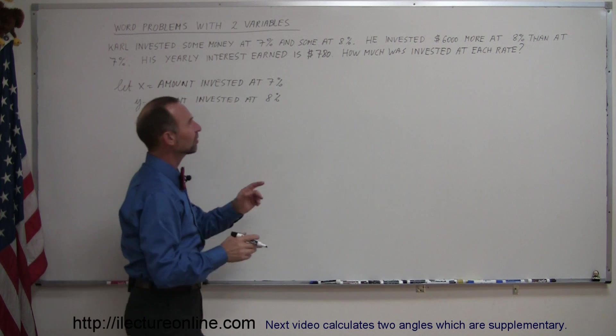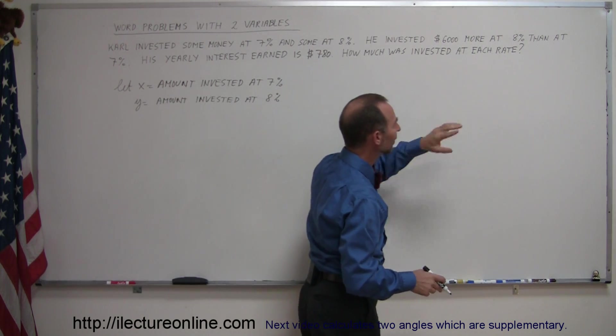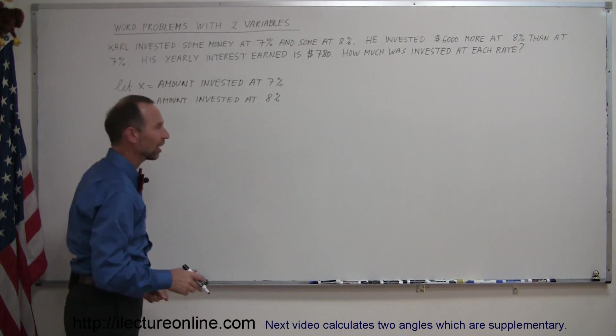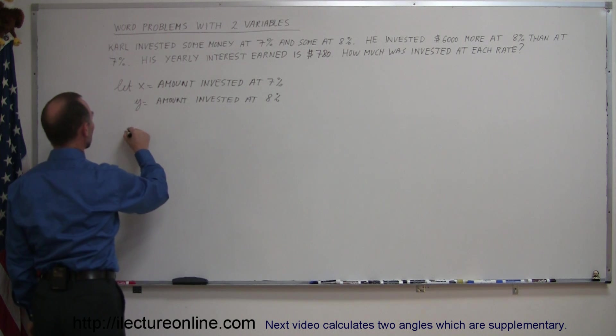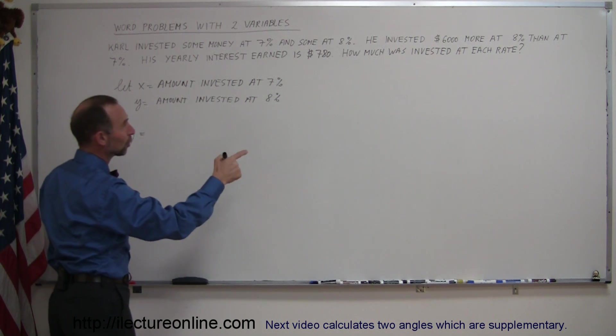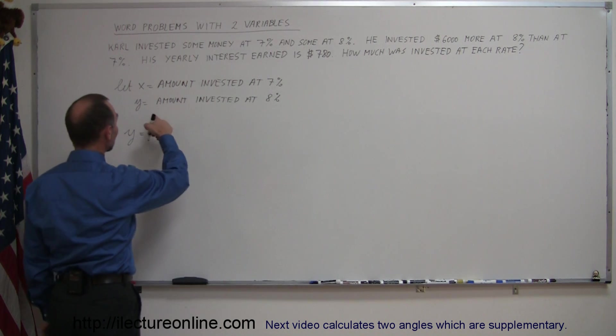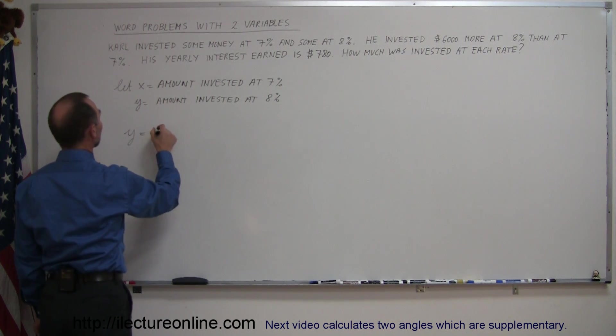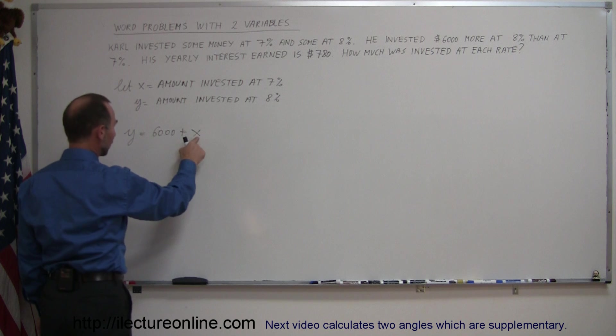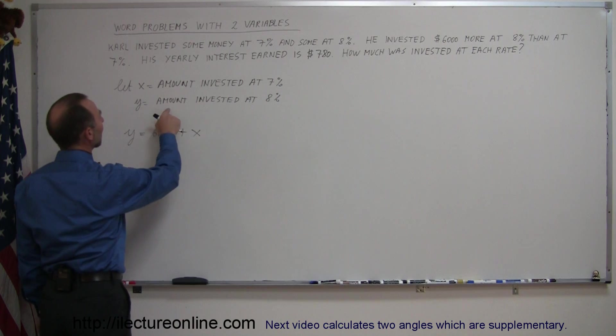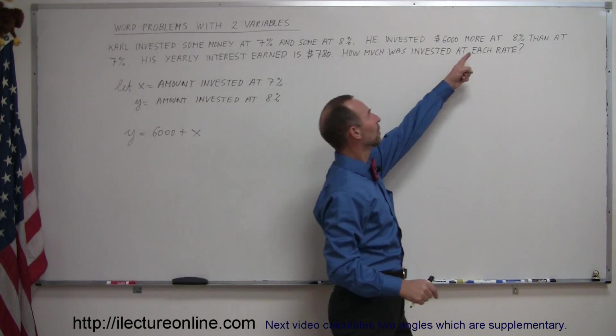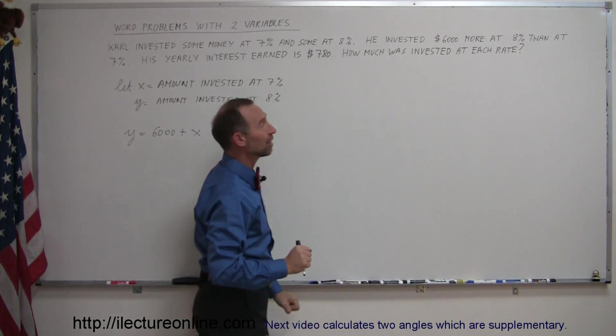It says that we invested $6,000 more at 8% than at 7%. Since y is the amount invested at 8%, we can say that y, which is the amount invested at 8%, is $6,000 more than what was invested at 7%, which is x. We can say that y equals $6,000 plus x, which means whatever we invested at x, add $6,000 more and that's what we invested at y. So that captures that information right there.